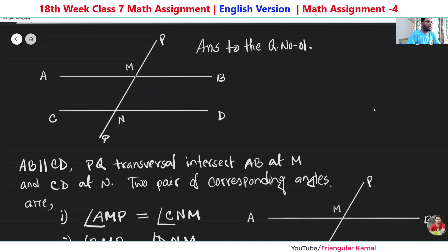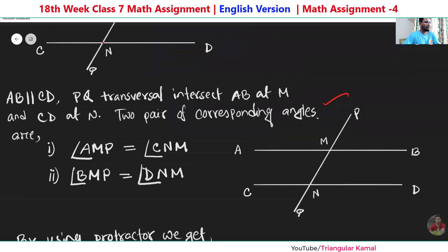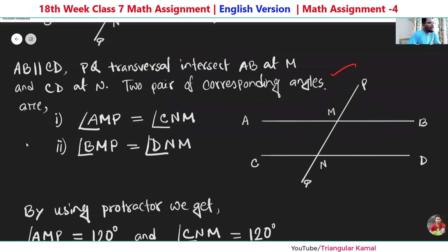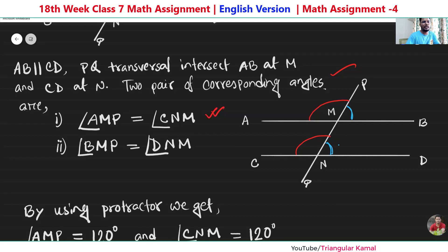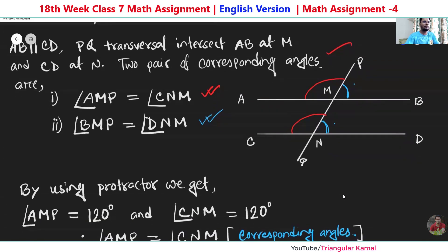Now for the two pairs of corresponding angles required by the question — you can take a screenshot here. Angle AMP is a corresponding angle with angle CNM; that is the first set. Another set: angle BMP corresponds with the angle on the same side of the transversal — one angle is inside and another is outside the parallel lines, so they are the same. The first set is done. Now by using the protractor we will measure the angles to show whether they are equal or not.